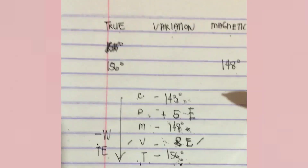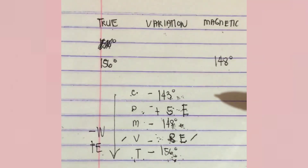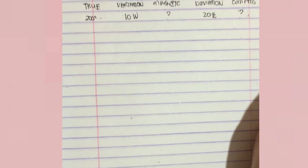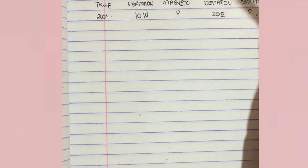That's it — very easy! Now let us try to assess your understanding. Let me give you a practice exercise. The given values are the true north, the variation, and the deviation. The missing values are the magnetic north and the compass north. I will give you one minute to answer.